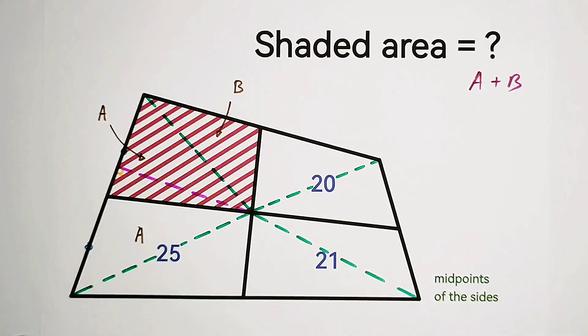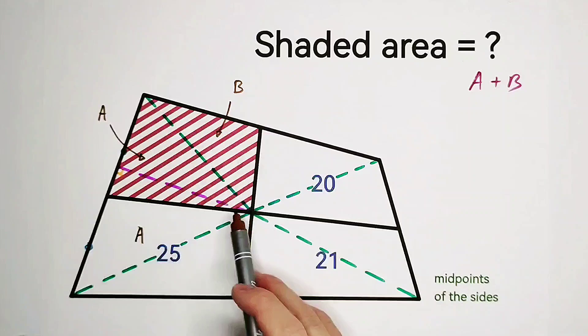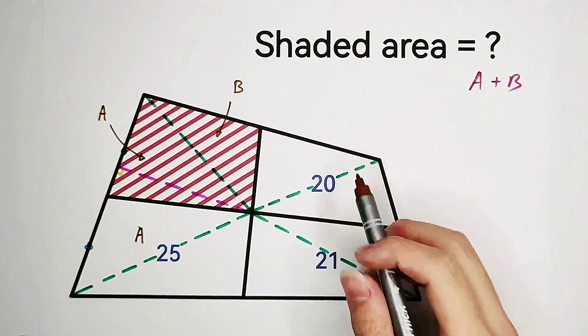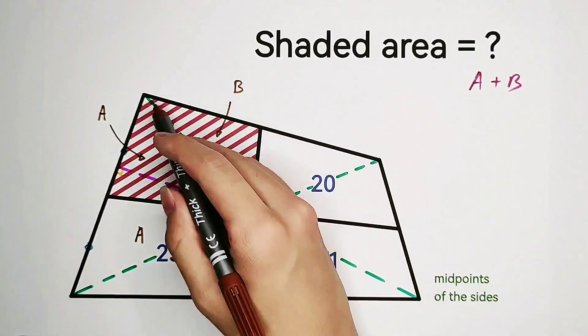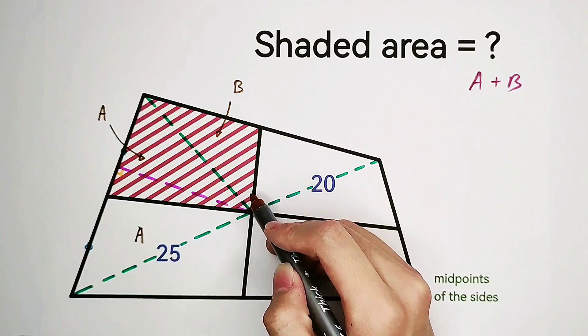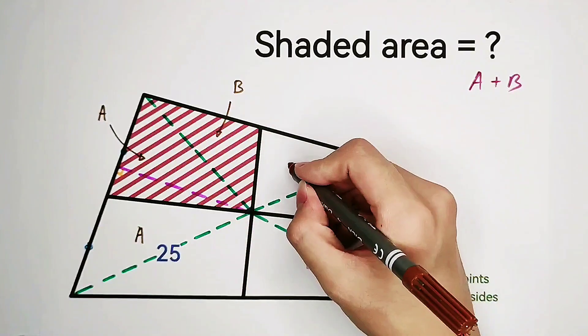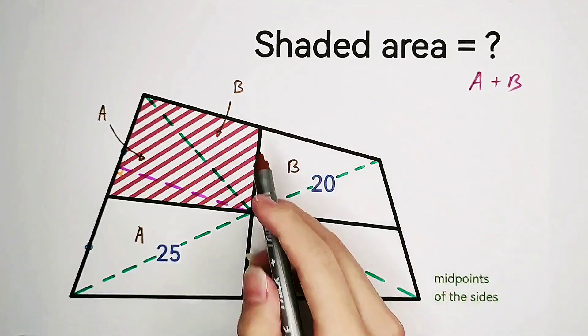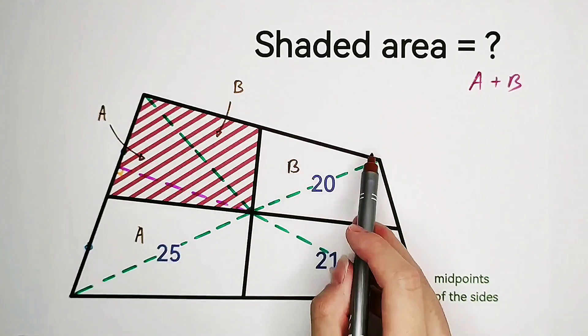We also have the same reason for this one, for this pair. It has an area B, this triangle as well, because this point is also the midpoint of our this side.